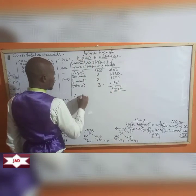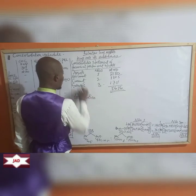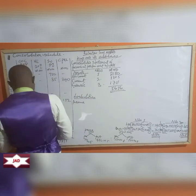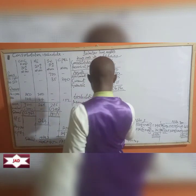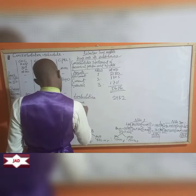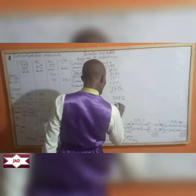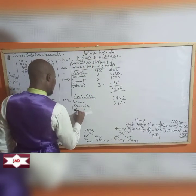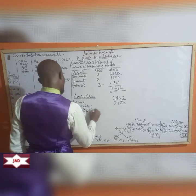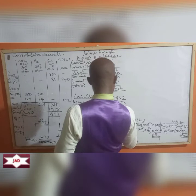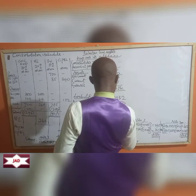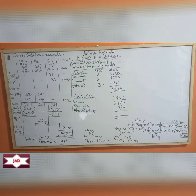For liabilities: reserve is 2,932. Share capital for Kings is 2,500. Minority interest (with respect to Queens) is 264. These add up to 5,696.